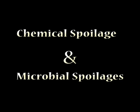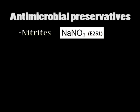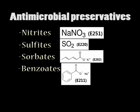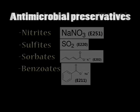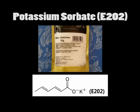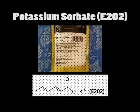Let's talk about chemical and microbial spoilage. Antimicrobial preservatives are those such as nitrates, sulphates, sorbates and benzoates, which each respond differently to different microorganisms. A preservative which we have been focusing on is potassium sorbate, and its mechanism is quite complex, involving antimicrobial activities at different sites of the microorganism.